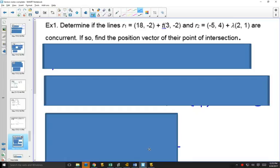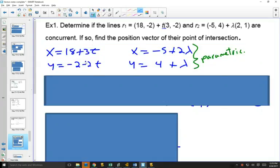Learning our new word, concurrent - we want to find out if they intersect at a point, and if they do, find their point of intersection. So I'm going to write out the parametric equations here. You could write out the regular equation first if you'd like, and then write the parametric equations. This is in two dimensions.